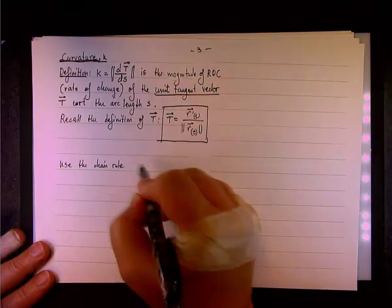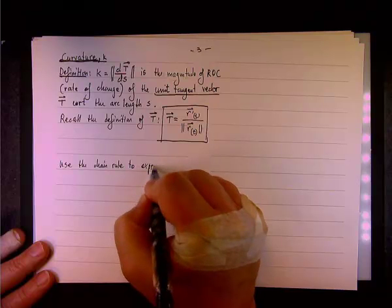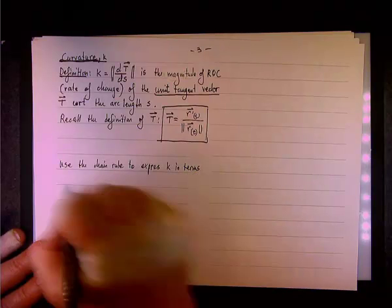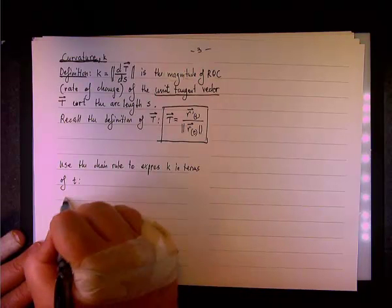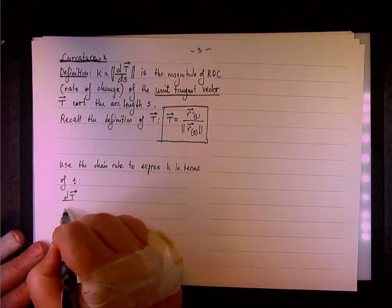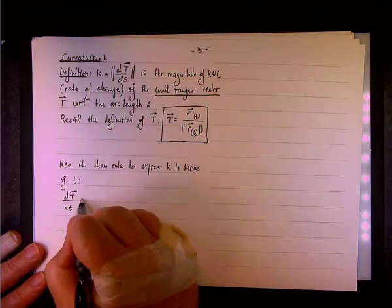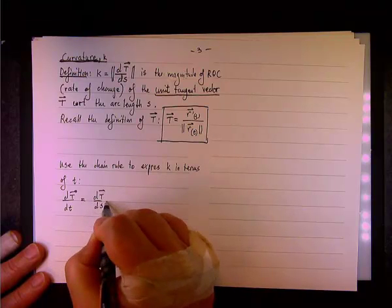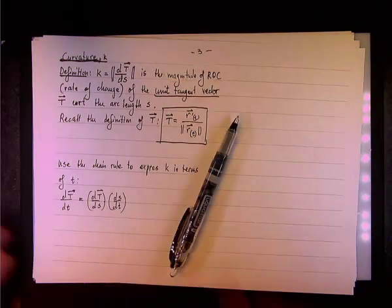What we do now, we use the chain rule to express K in terms of T. Okay, so dT/dT, which is a funny way to say it, is by the chain rule it will be dT/dS times dS/dT.